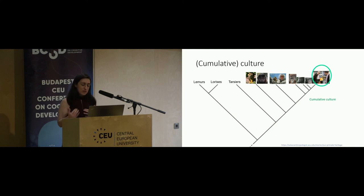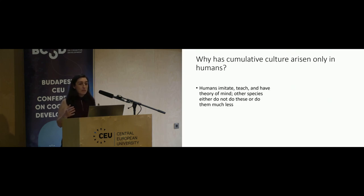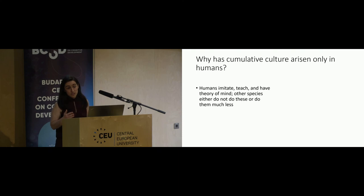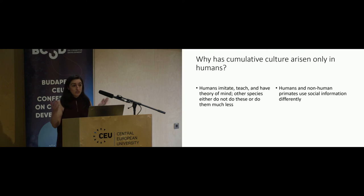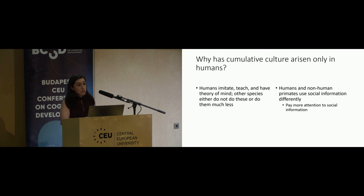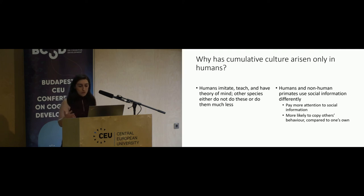Cumulative culture has undeniably been beneficial for human survival. The question is why humans would develop cumulative culture and not other primates. One proposal is that humans engage in cognitively complex activities like imitation, teaching, and theory of mind, while non-human primates either don't do these or do them to a much lesser extent. But another possibility is that at a lower level, humans and non-human primates use social information differently—using information acquired from others differently—which might involve paying more attention to socially-acquired information, a higher likelihood of copying others' behavior compared to one's own, or increased fidelity of copying when they do copy.